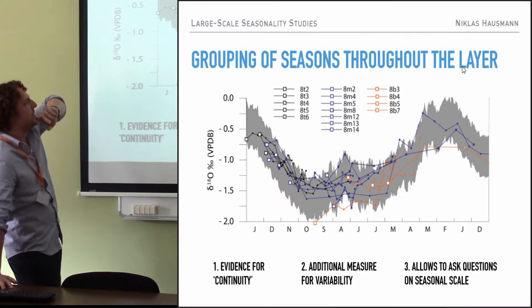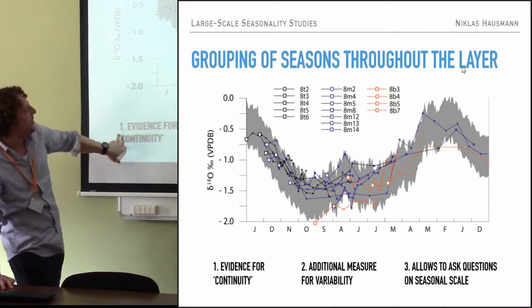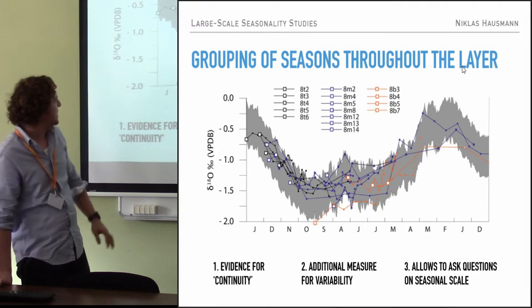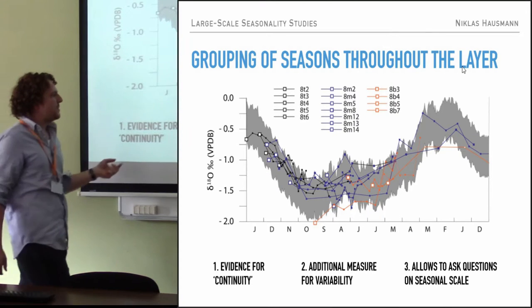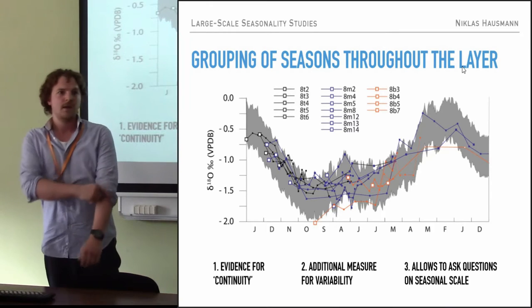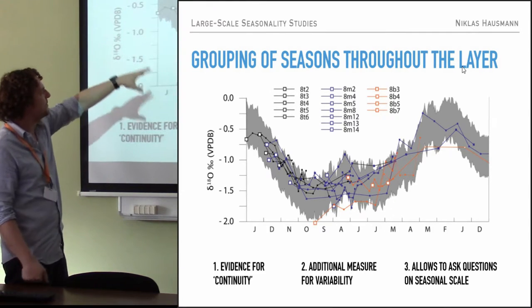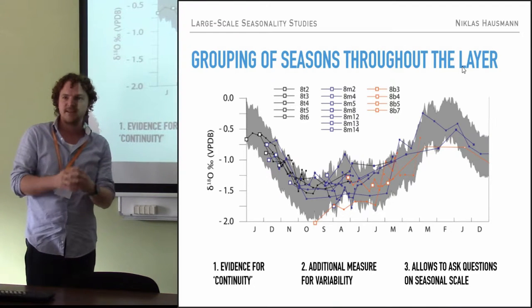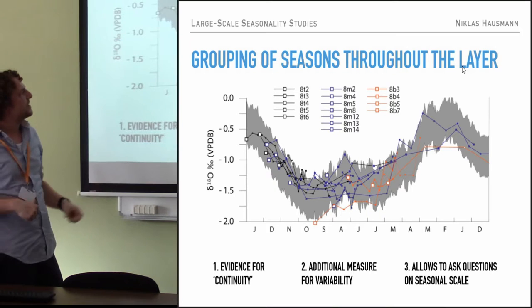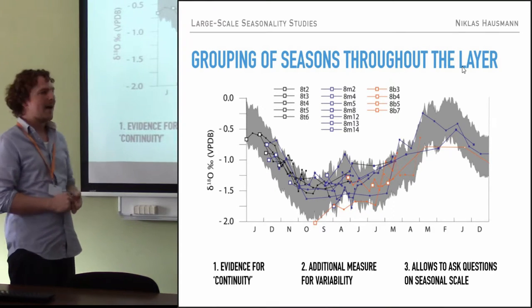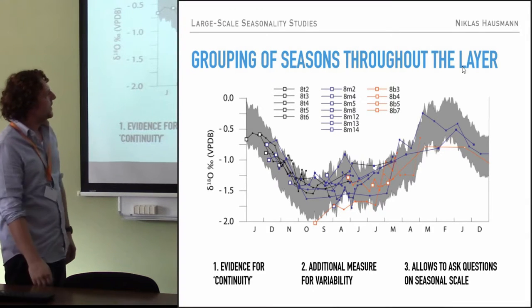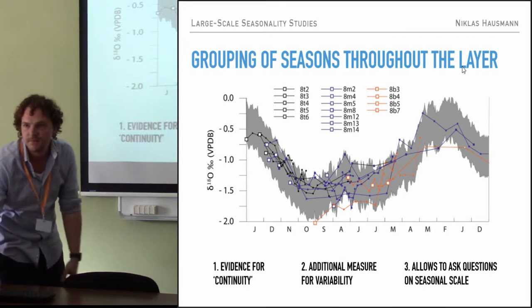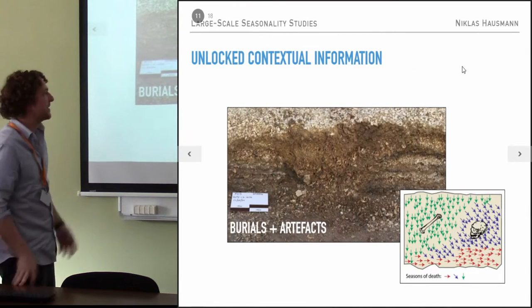By stratigraphically grouping the shells like this, you get evidence for continuity — people were there the whole time — which is interesting for sites where you don't have habitation structures, you don't have anything but the midden. It also gives you a measure of variability for the climatic proxy you're using, because if we can assume these shells all died in the same year, they must have been recording the same water temperature. Any variation between them is not inter-annual variability — it's the same water recorded differently, which tells you how accurate your climatic proxy actually is.